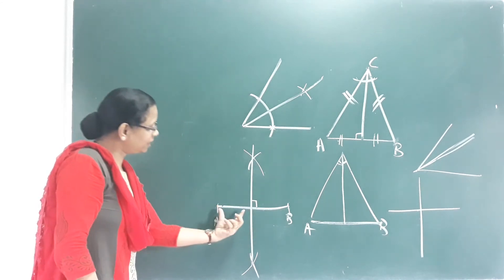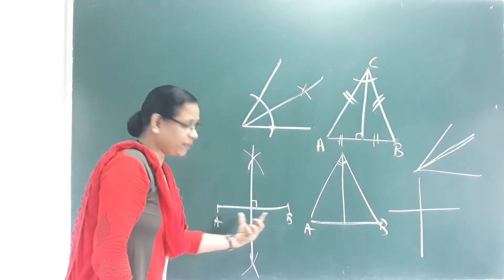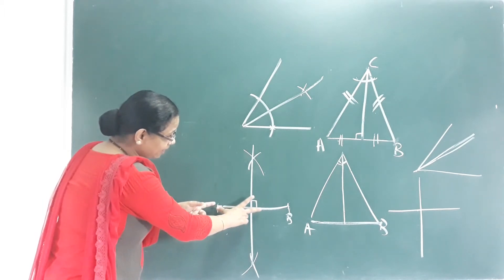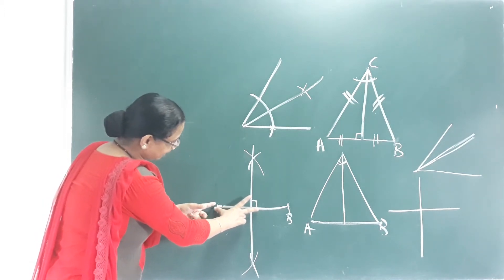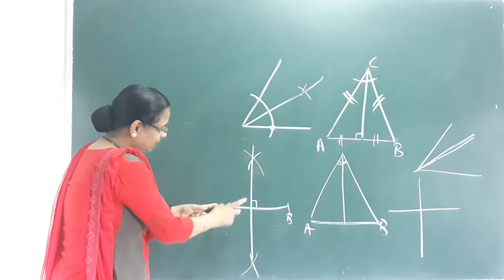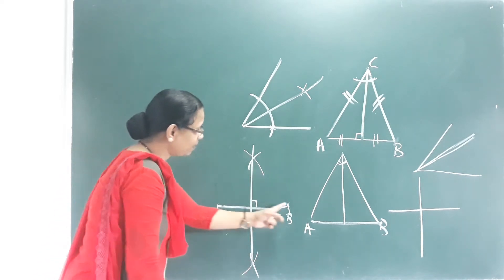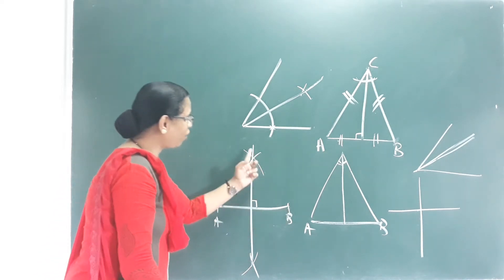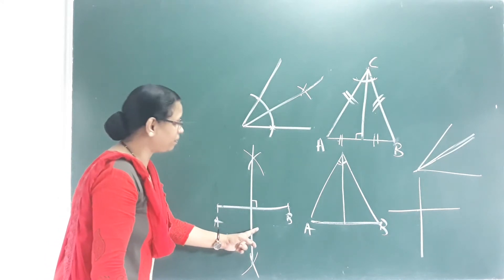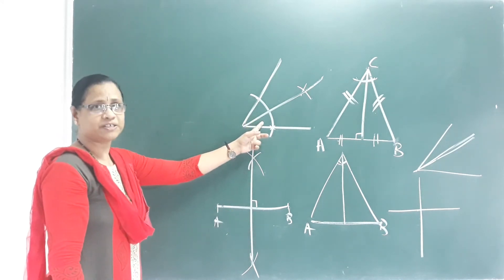Now let's join. If you put the perpendicular bisector, it is more than half. If you put more than half, you will put more than half again. Then we put more than half at this point, and then the perpendicular bisector. This is the angle bisector.